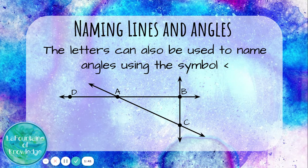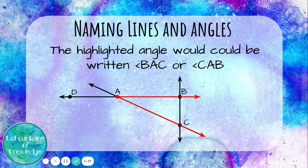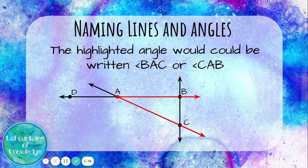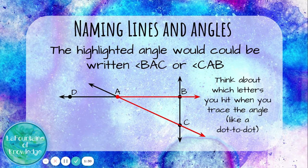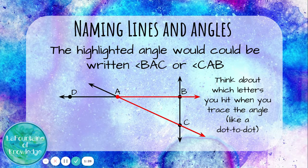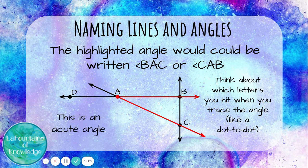The letters can also be used to name angles using this symbol. The highlighted angle would be written angle BAC or angle CAB. Think about which letters you hit when you trace the angle. Remember, it's kind of like a dot to dot. This is an acute angle.